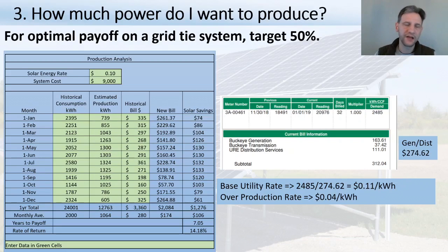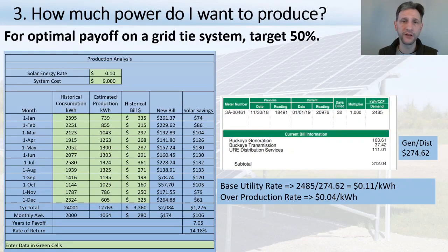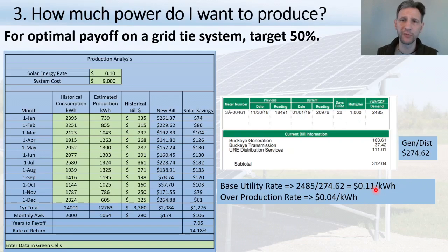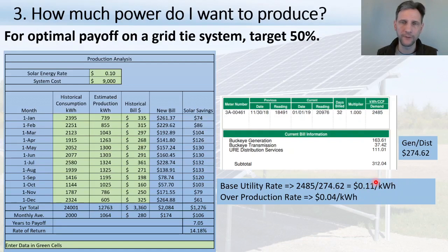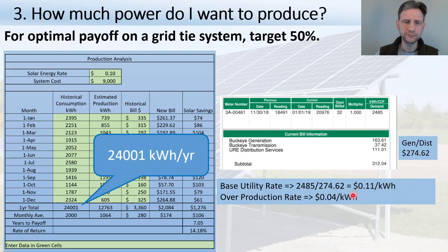If I sized a system to cover 100% of my power for the year, it would way overproduce in some months, and when I'm overproducing I only get paid 4 cents per kilowatt-hour. It takes a lot longer to pay off my system at 4 cents than at 11 cents. By keeping my system at around 50%, I'm only ever producing power at 11 cents per kilowatt-hour, which allows me to pay off my system significantly faster.